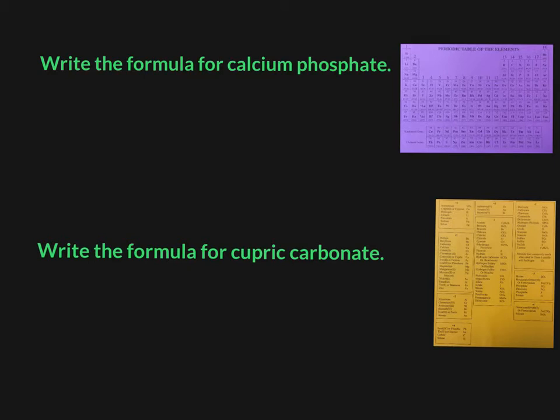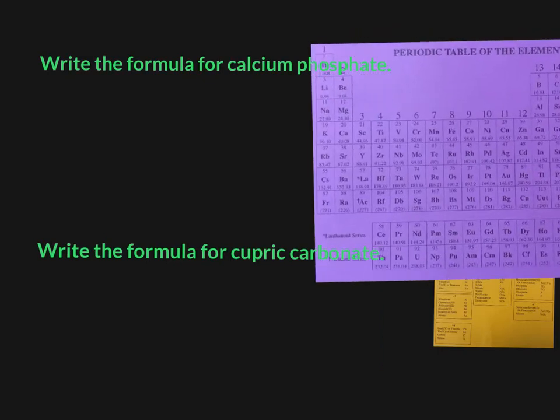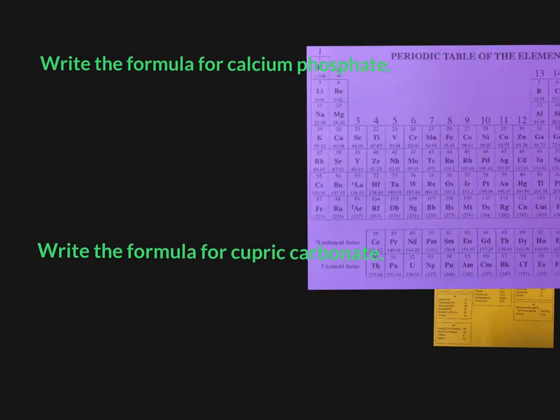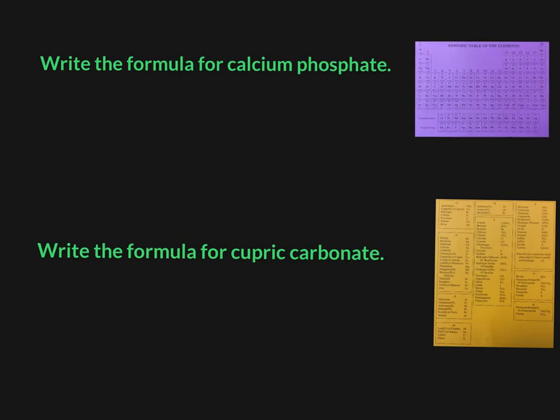Let's take a look at the first one. Calcium phosphate. Well, calcium, if you recall, is a group 2 element right here. So it's an alkaline earth metal. They all get a plus 2 charge when they donate their 2 valence electrons. So calcium is going to get a plus 2 charge.